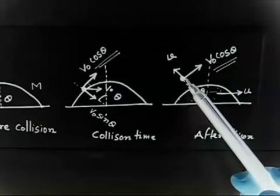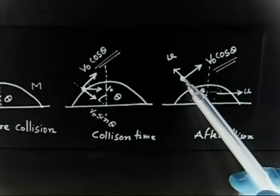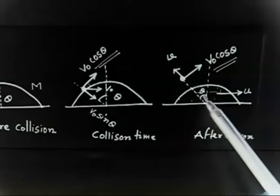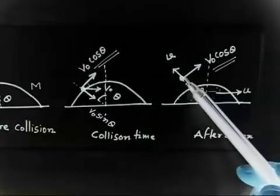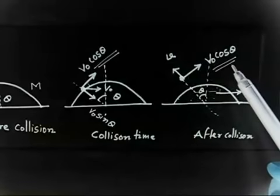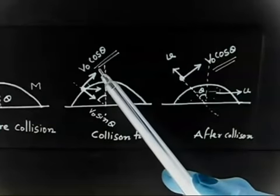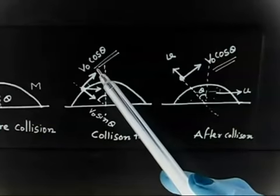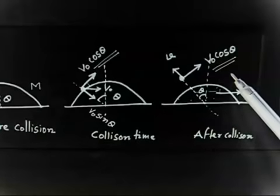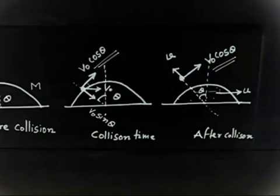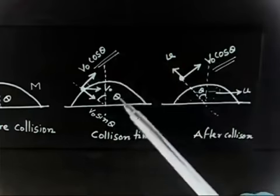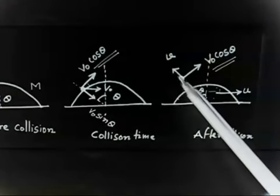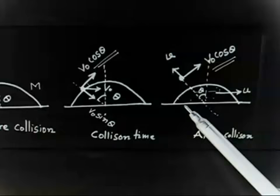After the collision, this mass rebounds back with a velocity v in the radial direction. Before the collision, the tangential velocity was v naught cos theta, and after the collision the tangential velocity remains v naught cos theta. The coefficient of restitution is given, and in the normal direction the velocity changes from v naught sin theta to v.